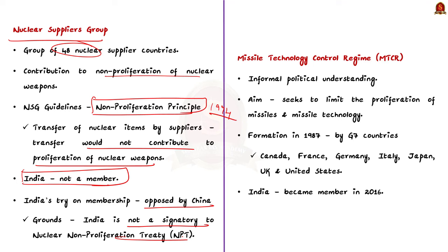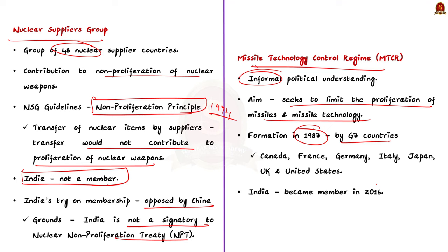The Missile Technology Control Regime (MTCR) is an informal political understanding among participating countries that seeks to limit the proliferation of missiles and missile technology. The MTCR was formed in 1987 by the G7 countries: Canada, France, Germany, Italy, Japan, UK, and USA. India became a member of MTCR in 2016.